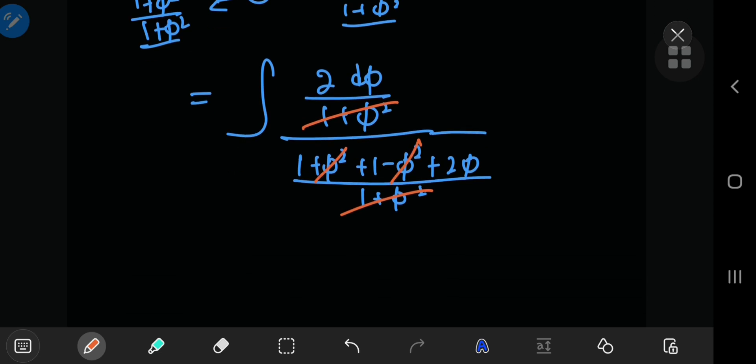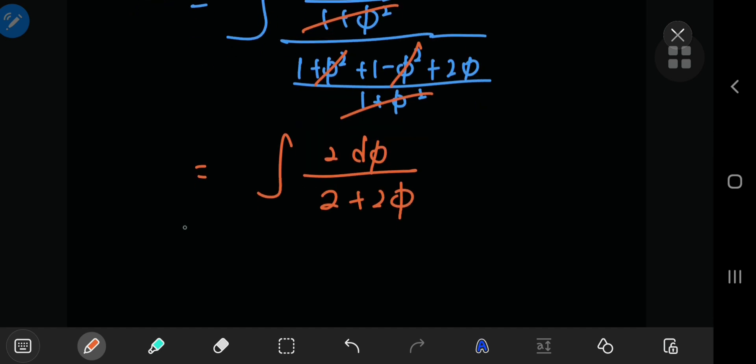These things here cancel out and you got a couple of squared terms in the denominator cancelling out. So you're now left with 2 times d phi divided by 1 plus 1, 2 and 2, plus 2 phi. The 2 can be factored out as well and you're left with d phi by 1 plus phi.